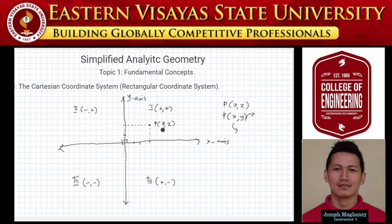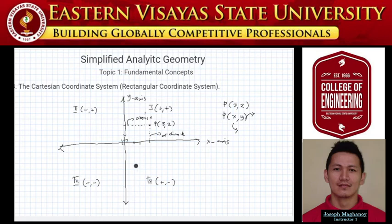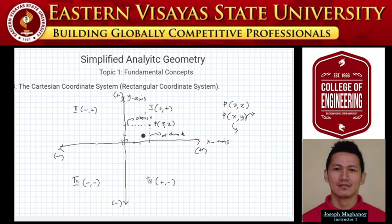For x, we call it the abscissa. For y, we call it the ordinate. Going up on the y-axis is positive, going down is negative. On the x-axis, going right is positive and going left is negative. I hope the Cartesian coordinate system is clear in your understanding.